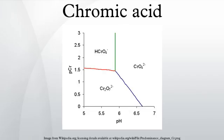Loss of the second proton occurs in the pH range 4-8, making the ion HCrO4⁻ a weak acid.